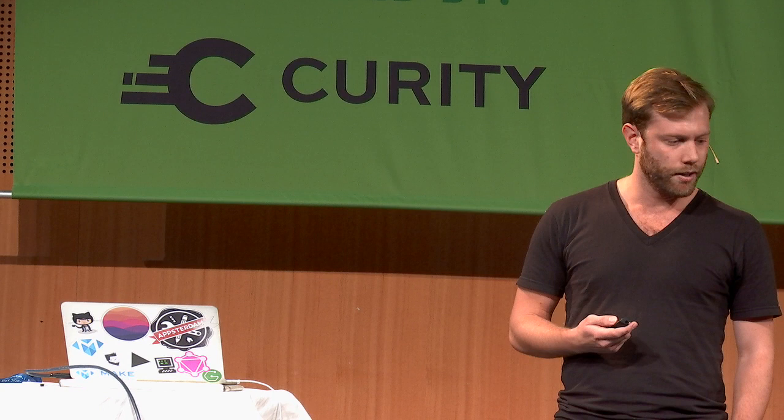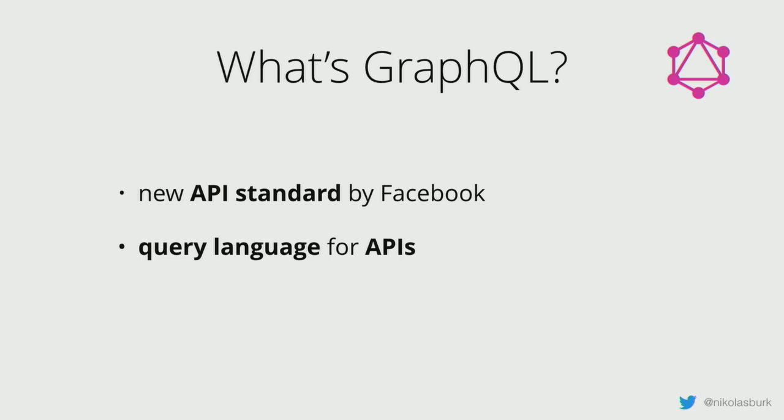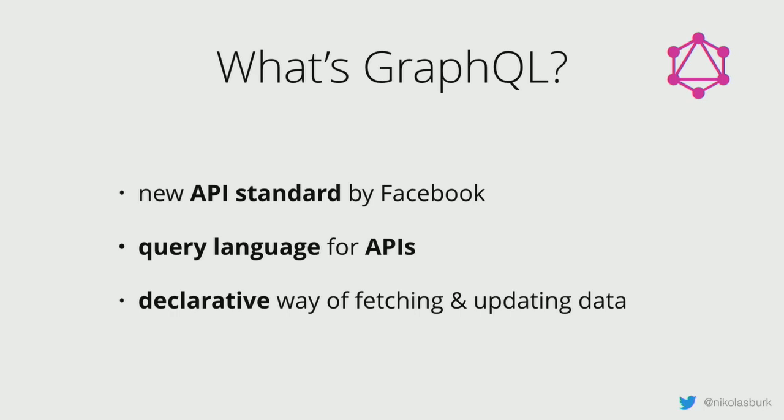Let's start with a basic introduction to GraphQL. What is GraphQL? First and foremost, it's an API standard that was developed and open-sourced by Facebook in 2015. It's a query language for APIs. Despite sharing the same suffix as SQL, it has nothing to do with databases — it's an API technology, not a database technology, and that's a very common misconception.